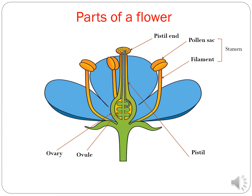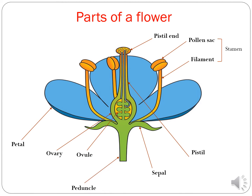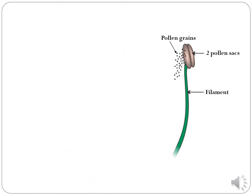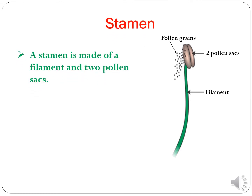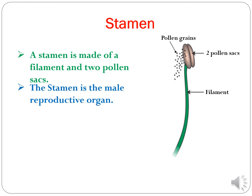The flower contains many stamens but only one pistil. This is the petal, this is the sepal, and this is the peduncle that holds the whole flower. A stamen is made up of a filament and two pollen sacs. Each pollen sac is made up of many yellow pollen grains.